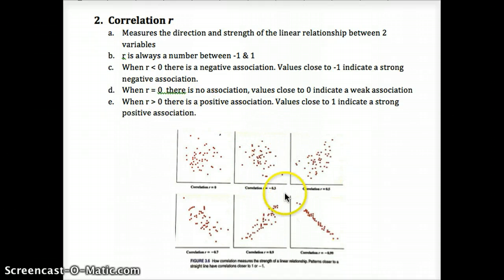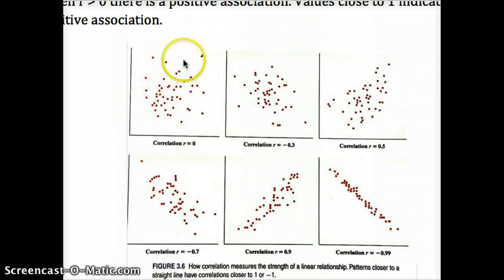Here are some examples there. Here's no clear pattern. Here's a weak negative pattern. Here's a moderate positive pattern, r is 0.5. r is negative 0.7. We can see more of a linear pattern emerging, although it looks like a thick line, so some values are kind of far.